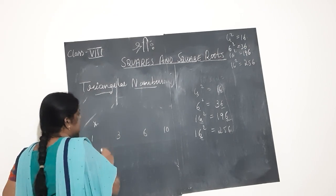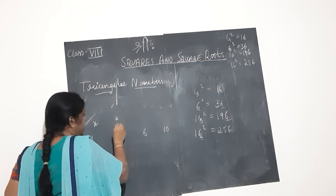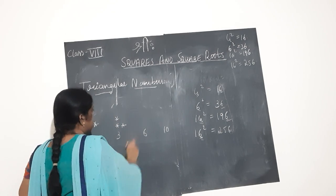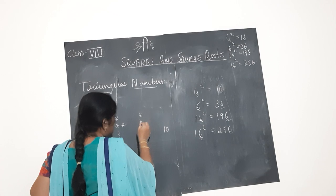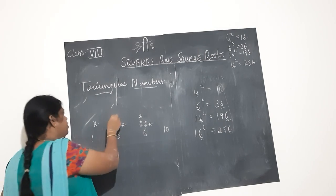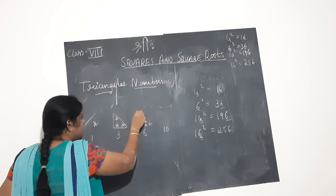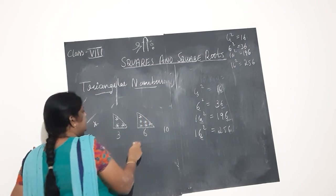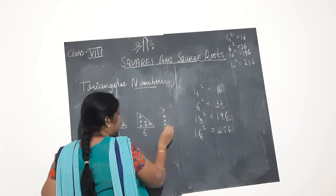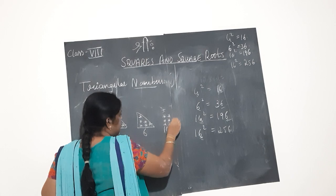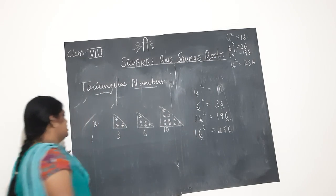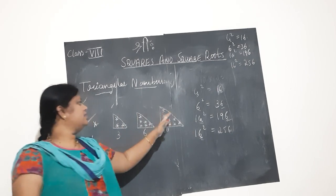Why? See — 1 means 1 star. 3 means 1, 2, and 3 — written in an L shape; if you join them you get a triangle. 6 means 1, 2, 3, 4, 5 — if you join them you get a triangle. For 10, the rows are 4, 3, 2, 1 — again forming a triangle. So 1, 3, 6, and 10 are the triangular numbers.